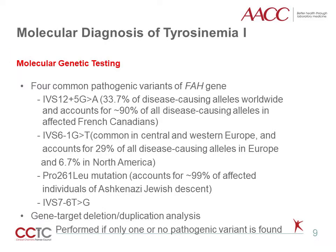Molecular testing of the FAH gene can also be used to further diagnose the particular genotype in tyrosinemia 1. Four common pathogenic FAH variants have been identified. Preliminary molecular testing involves sequence analysis of the FAH gene, followed by targeted gene analysis in populations where specific variants are common. For example, the proline-to-leucine variant occurs in about 99% of affected individuals of Ashkenazi Jewish ancestry, while the IVS12+5g-to-a variant accounts for 33.7% of all variants worldwide and is most predominantly found in French Canadians.